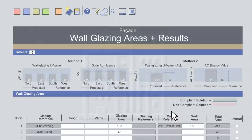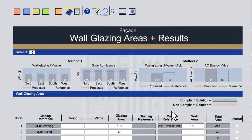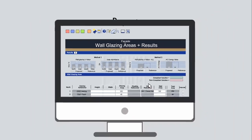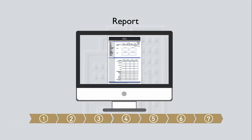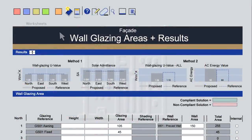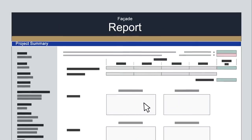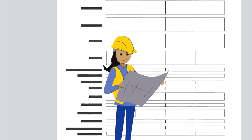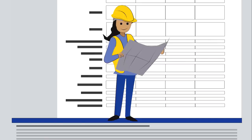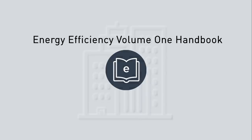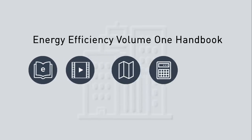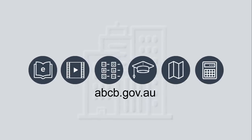When the calculator input reflects the final design settings, Step 7: report the results. The calculator can generate a report summarising the results; you'll need to accept a legal disclaimer to enter this tab. Remember, all information needs to be checked and verified against the design documentation for compliance assessment. Further details about the facade calculator, including additional examples, are provided in the Energy Efficiency Volume 1 Handbook and other resources from the ABCB website.